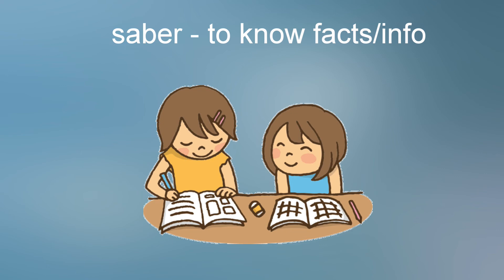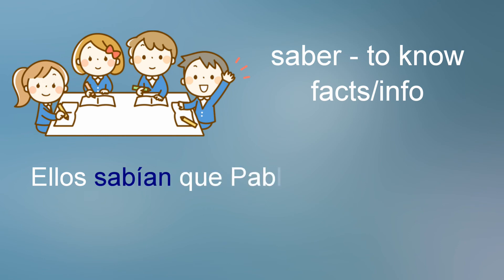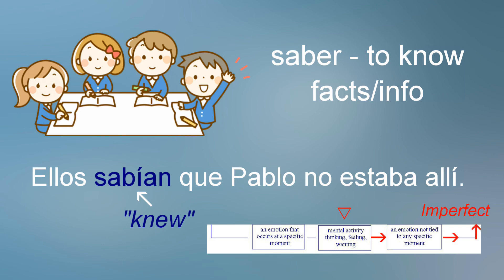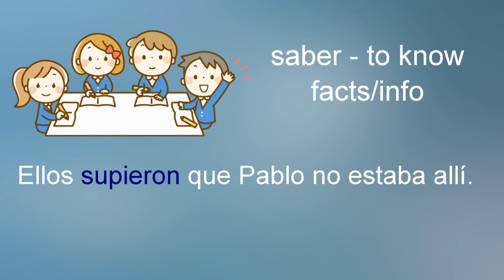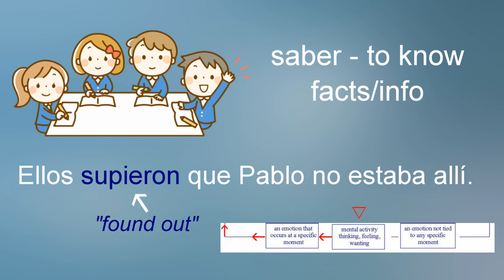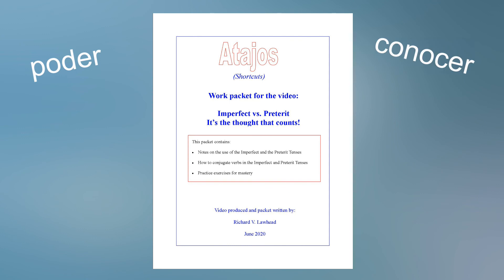Saber — this verb means to know facts or information. See how the use of the imperfect or preterite changes its interpretation. Ellos sabían que Pablo no estaba allí — they knew that Pablo wasn't there — it's a mental activity tied to no specific moment. However, ellos supieron que Pablo no estaba allí is interpreted as 'they found out that Pablo wasn't there.' Since the preterite supieron indicates a specific moment or action or event, the interpretation is changed to the stronger 'found out.' Many other verbs in Spanish will do this as well — there is a list of them in the Atahos packet.